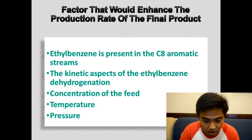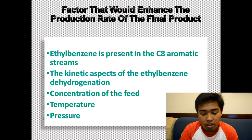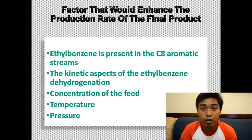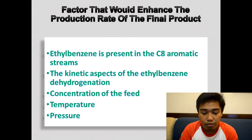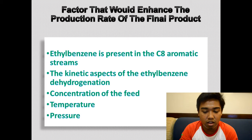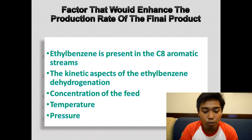The third factor is concentration of feed. Higher feed concentration will result in higher yield of product. The fourth factor is temperature, which plays an important role — it is vital to ensure the process takes place at an optimum temperature, otherwise production yield decreases. The fifth factor is pressure, which must be monitored throughout the process to ensure the phase of product obtained is as desired.